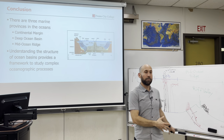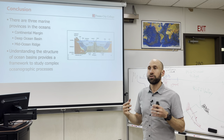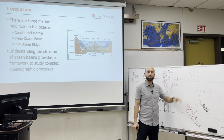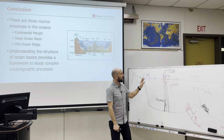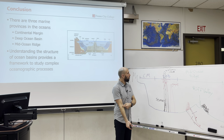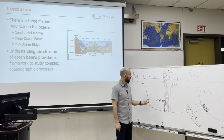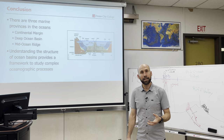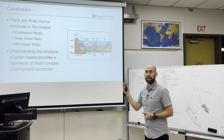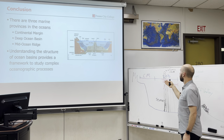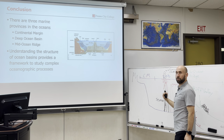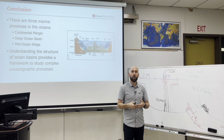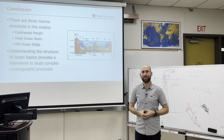In conclusion, this is a really important lecture to establish a framework of the oceans. Having this setup — continental margin, deep ocean basin, and mid-ocean ridge — we can look at various processes. We can understand primary productivity and nutrient cycling, and think about ocean circulation from surface currents to deep currents and the processes of upwelling and downwelling. Dividing the ocean basin into the three marine provinces will support our further learning in complex oceanographic processes. Thank you so much, I'll see you in the next one.